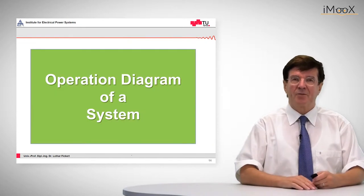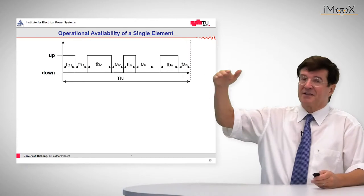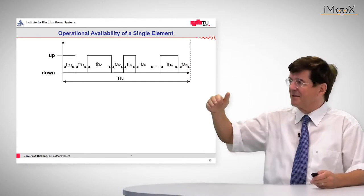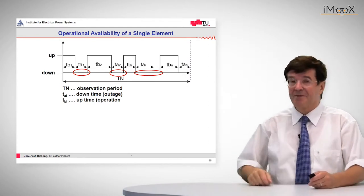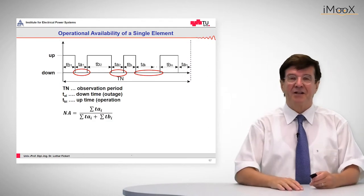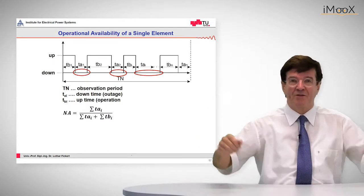So let's see what is the operation diagram of a system. A system is in the up state and sometimes it breaks down as indicated in red circles. The non-availability is given by the total outage time divided by the whole observation time.